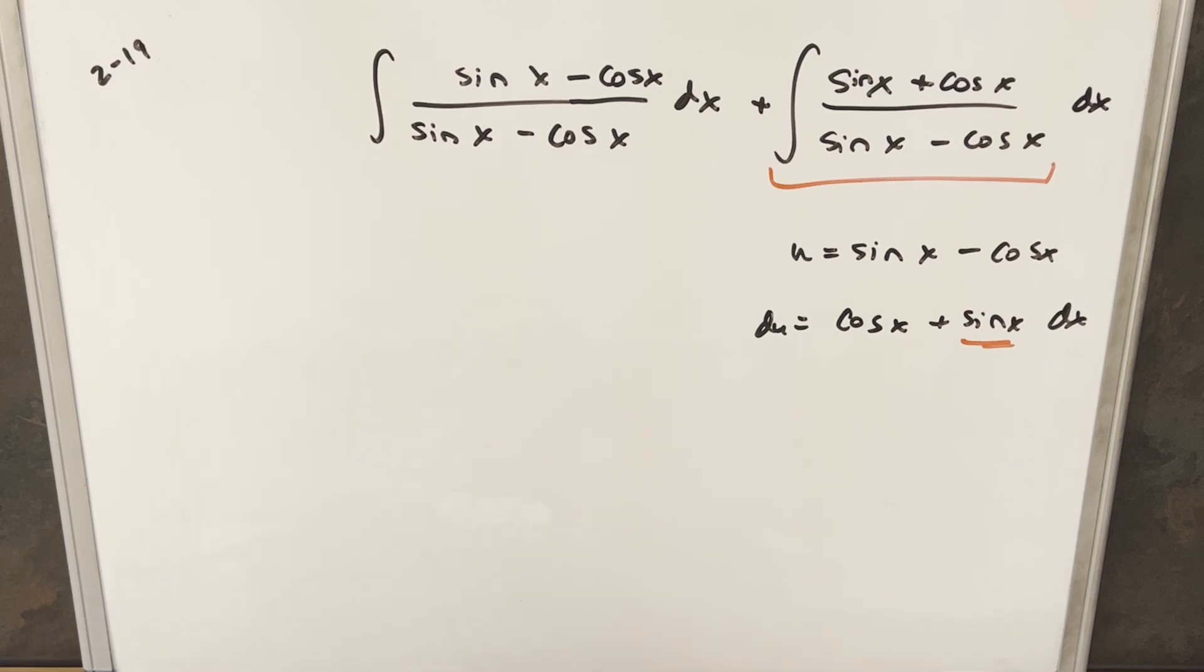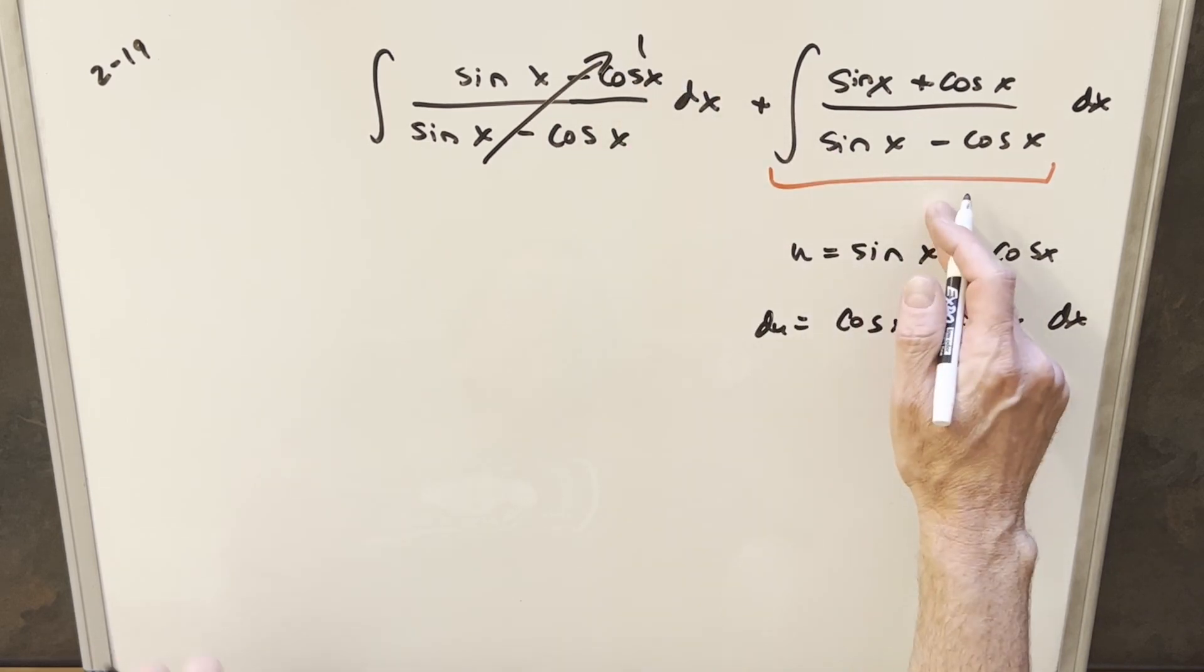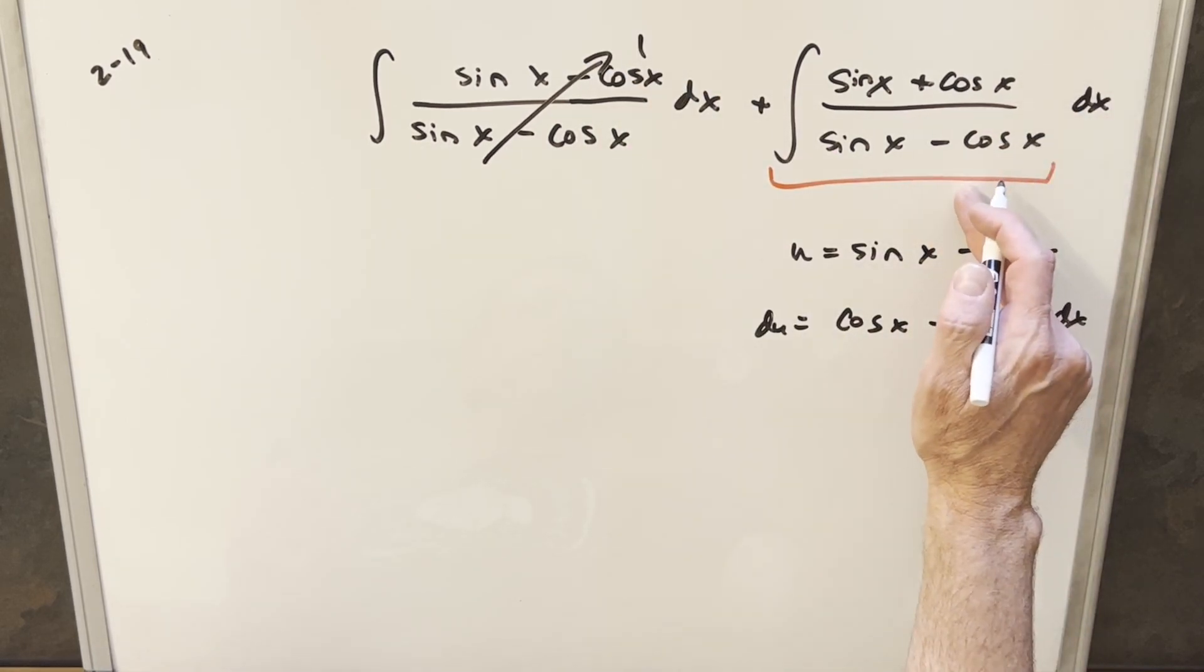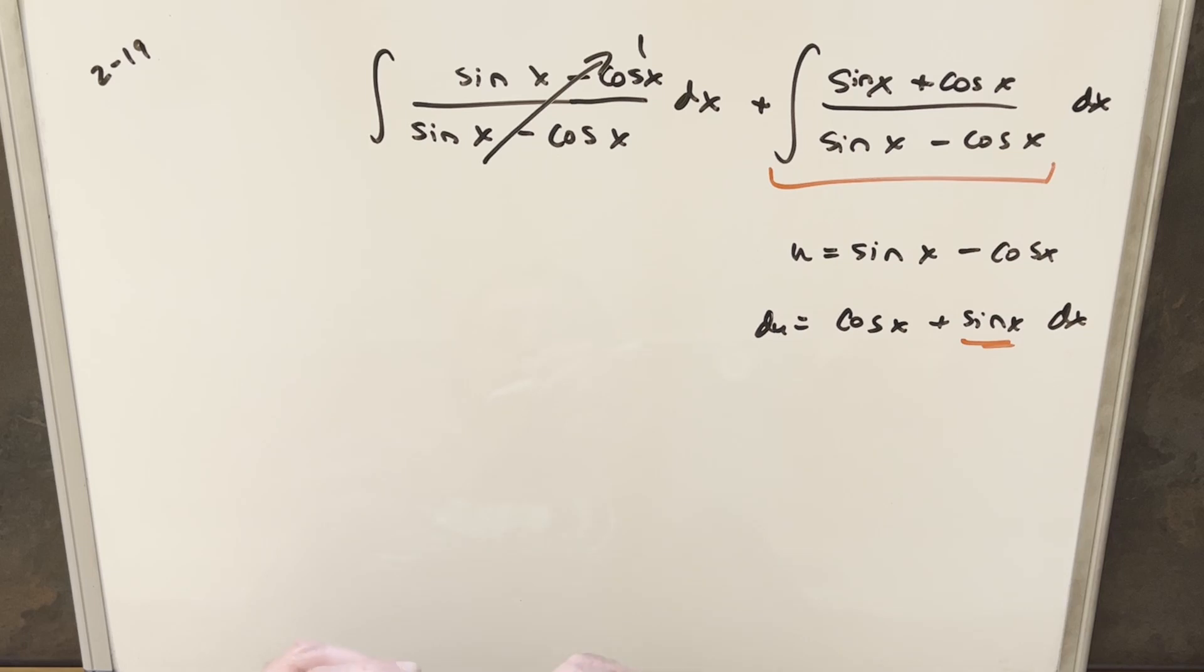So now I'm in really good shape from the standpoint that I've got two really easy integrals, right? Because this is just one right here. And this is going to be just du over u. The only problem is now I have changed it.